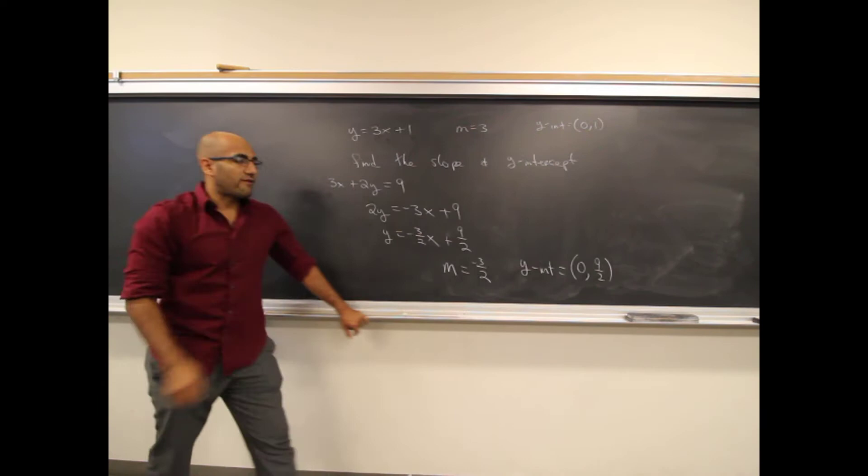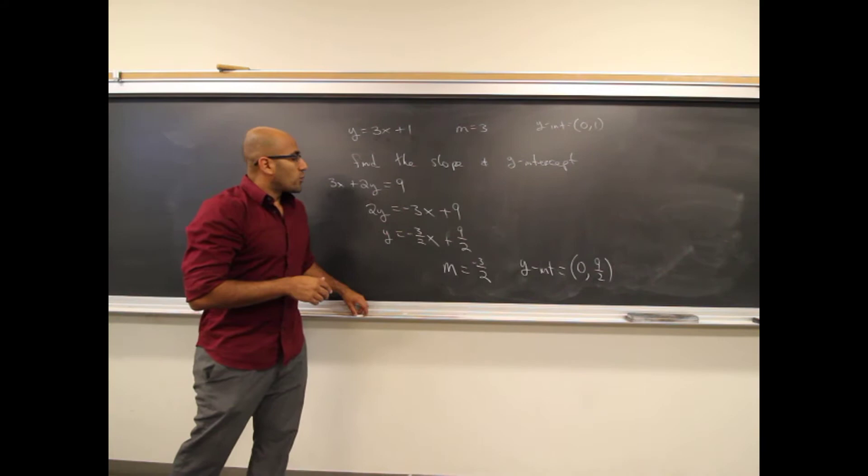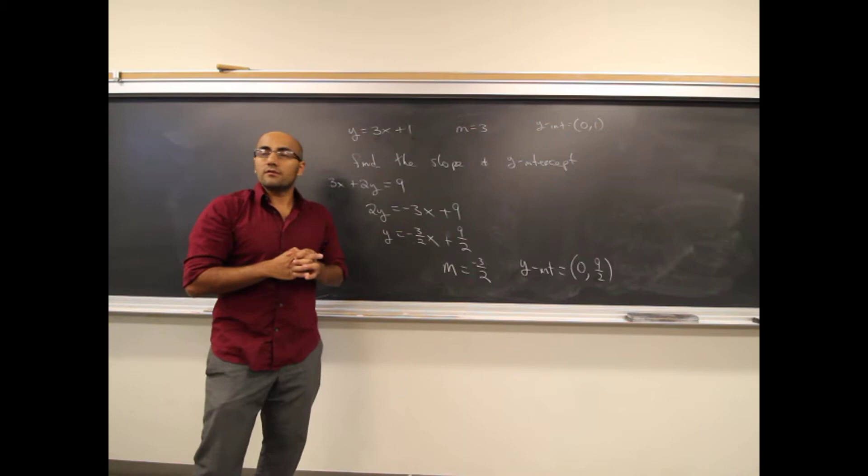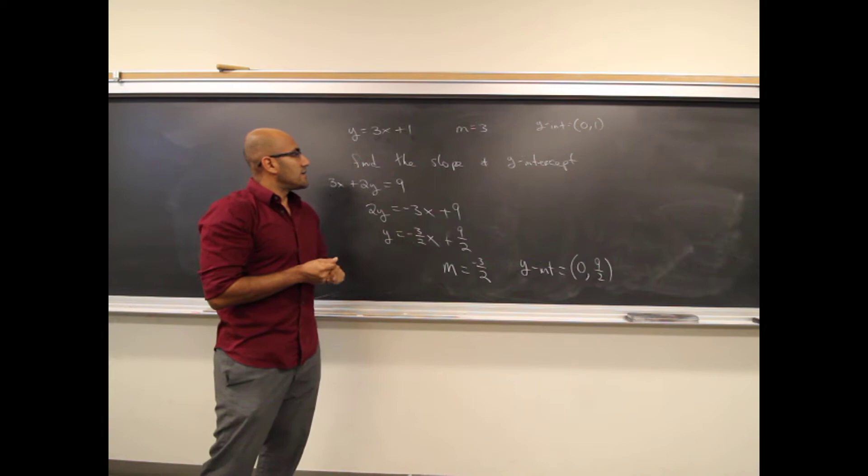So now in this section, what we're going to do is go backwards. We're going to be given some information and asked to find the equation of the line. There's a variety of different word problems and exercises, but all of them in this section have the goal of getting you to find the equation of the line that satisfies certain conditions.